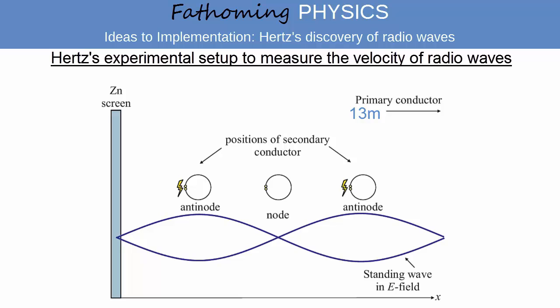Hertz could detect the nodes of his standing wave by comparing the sparking produced across the secondary conductor as he moved away from the screen. The distance between two antinodes, where the sparking was greatest, is equal to half a wavelength.